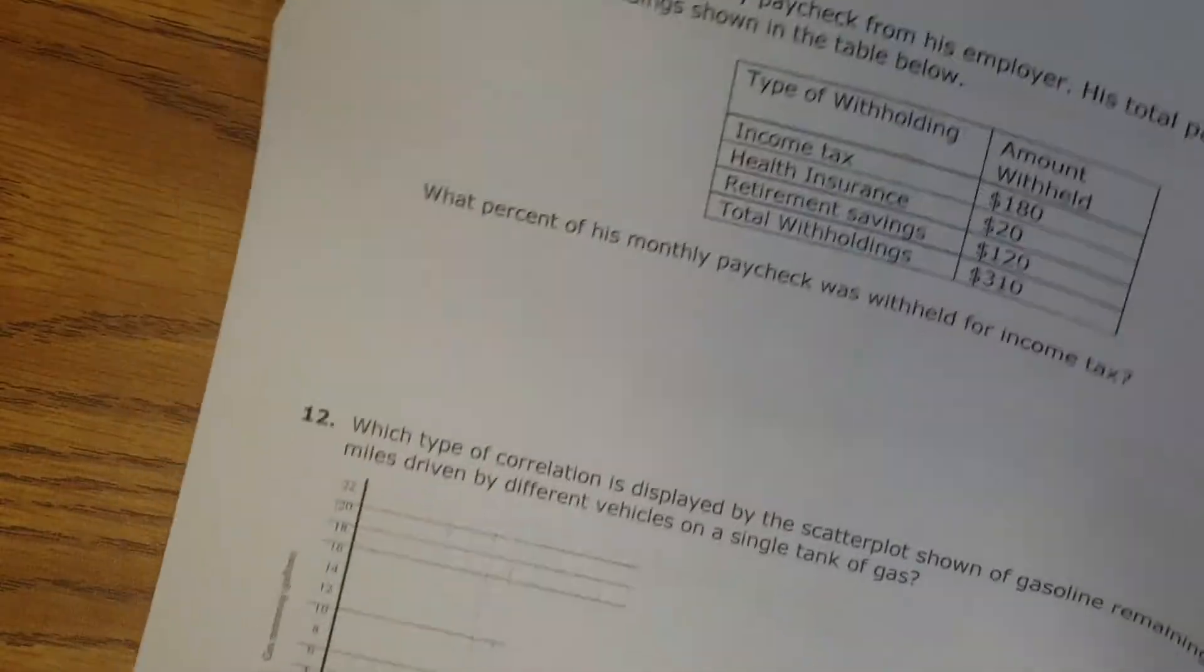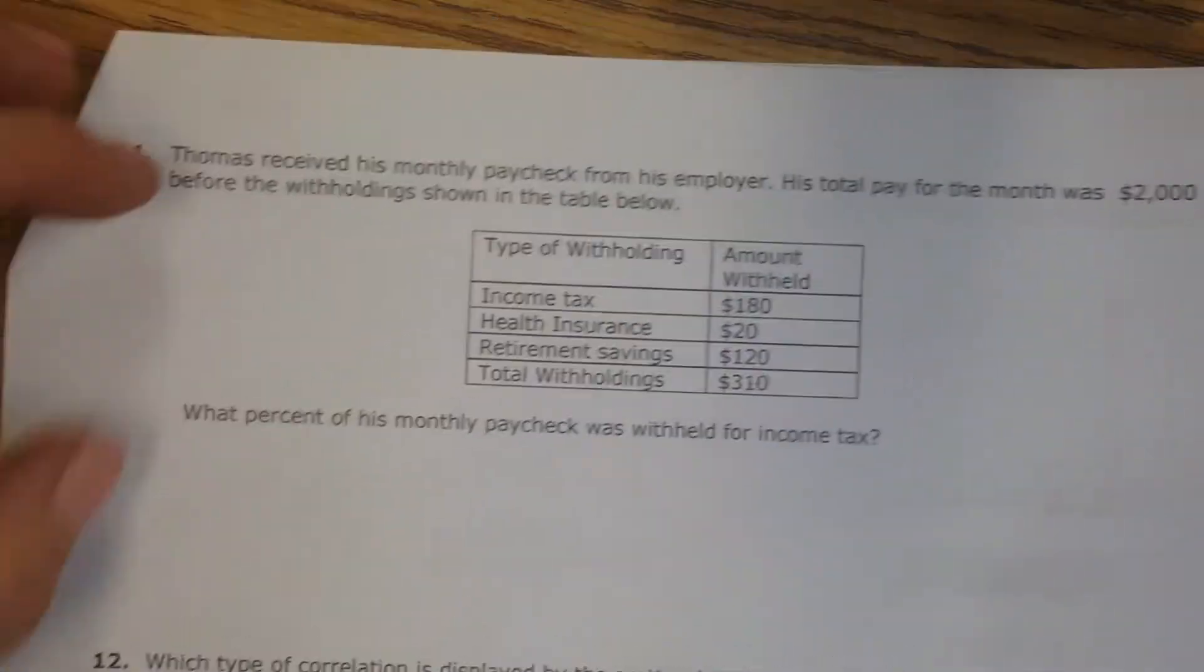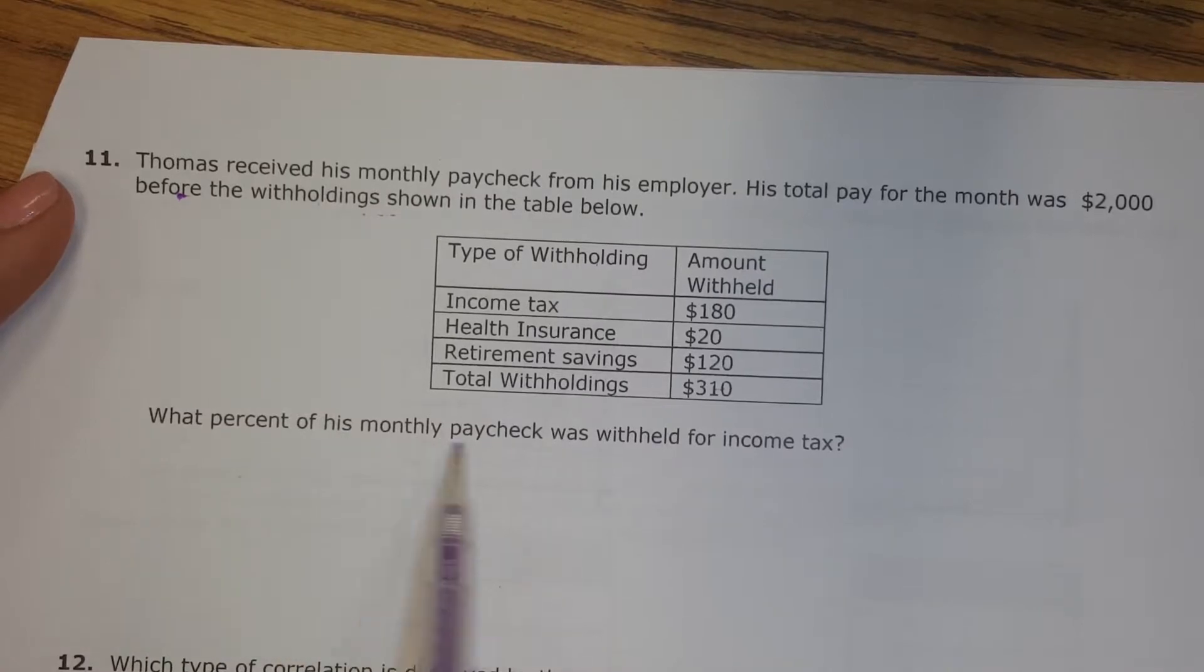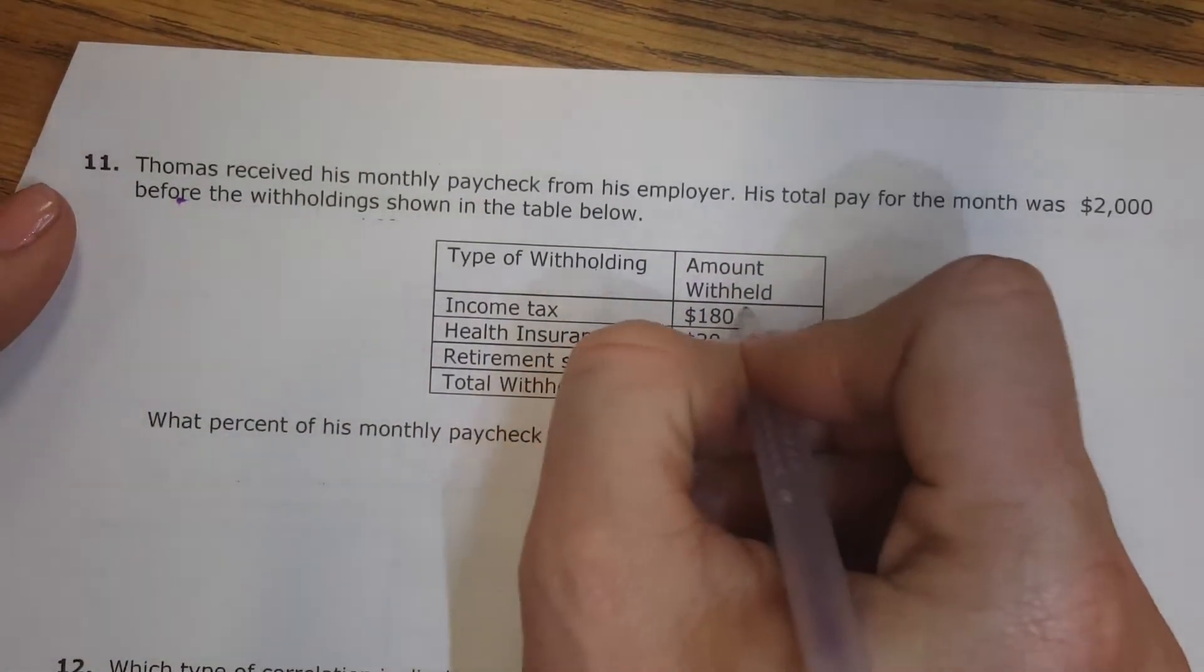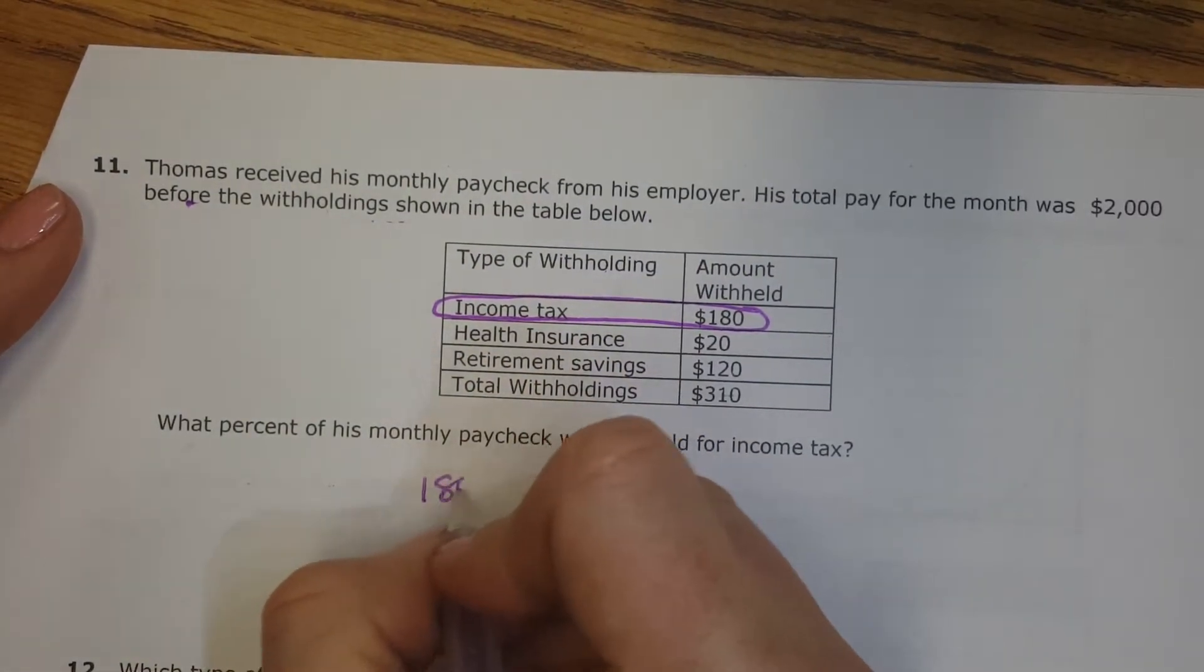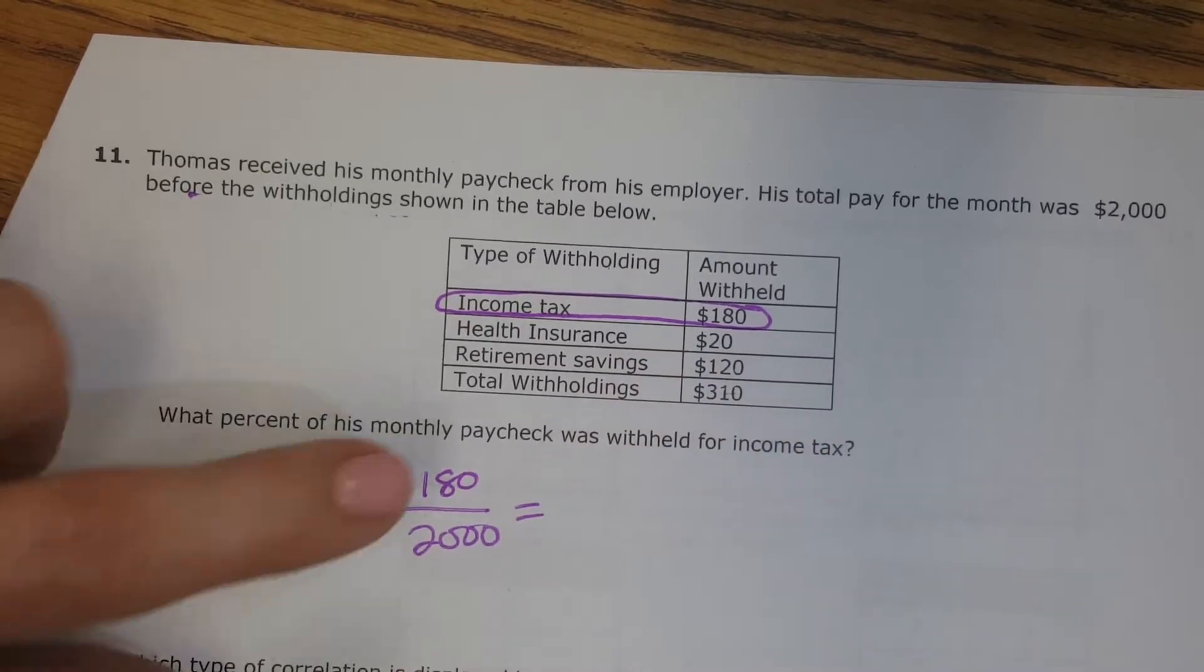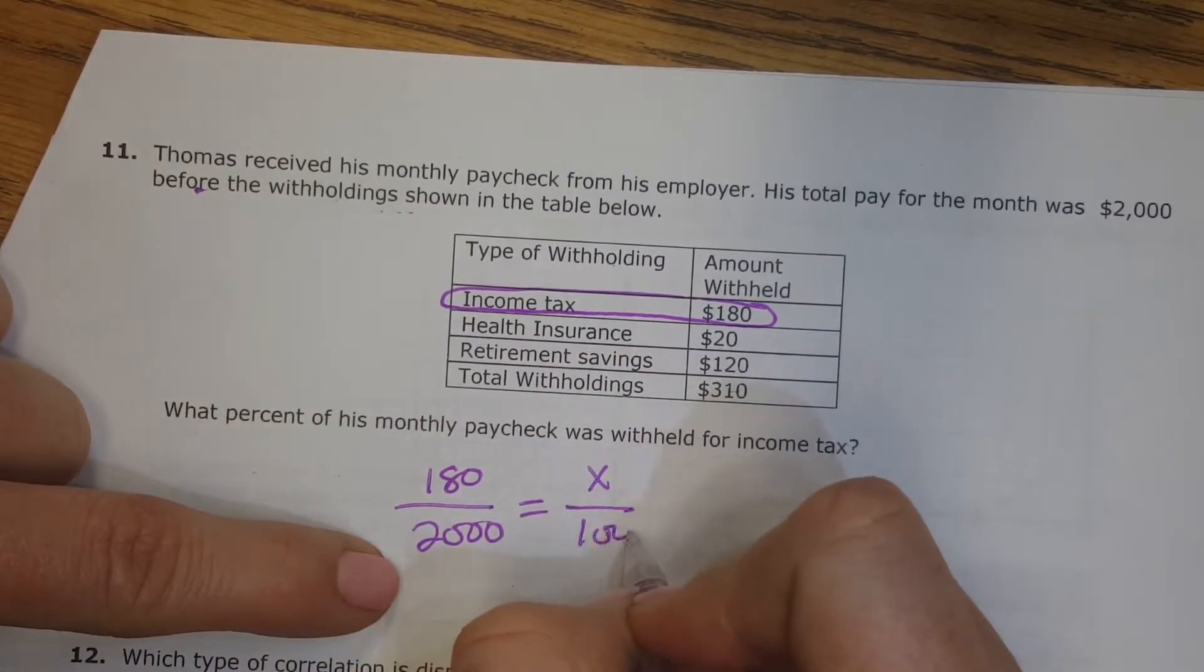All right, number 11, Thomas received his monthly paycheck. His total pay for the month was $2,000 before the withholdings. Withholdings is the stuff that they take out of your paycheck. What percent of his monthly paycheck was withheld for income tax? Income tax was $180 out of his total pay of $2,000. And so that's going to be our percent out of 100%. So we don't know what percent that is, but we know it's out of 100%.